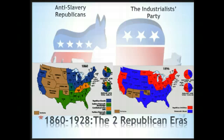The next party era runs from 1860 to 1928. These are your two Republican eras. The reason you split the Republican eras in two is because even though this is a Republican-dominated time, the Republican party kind of changes its focus and its party platform.